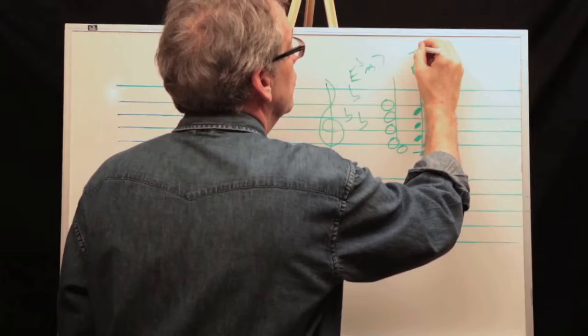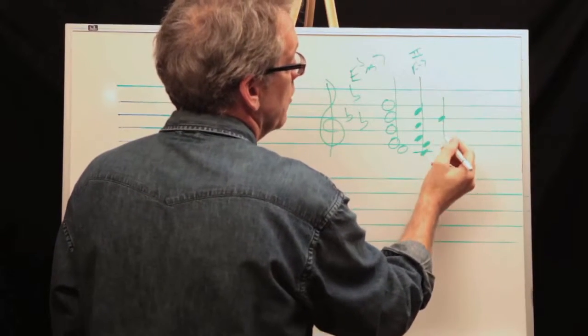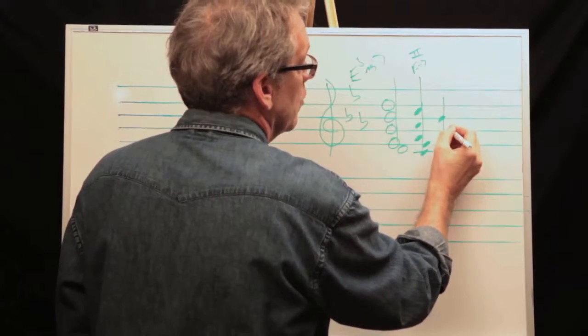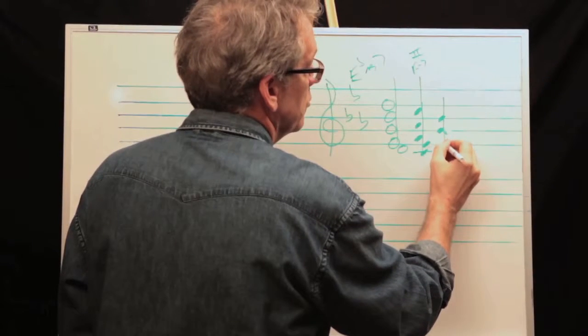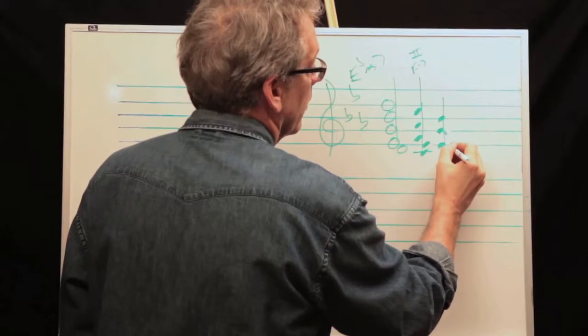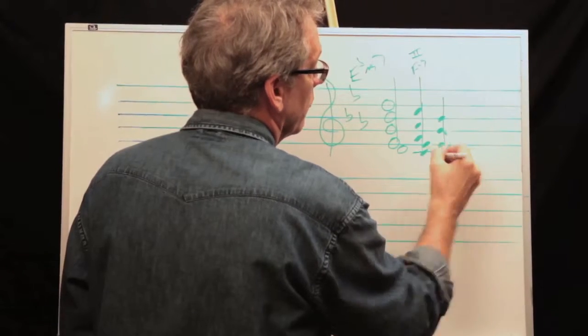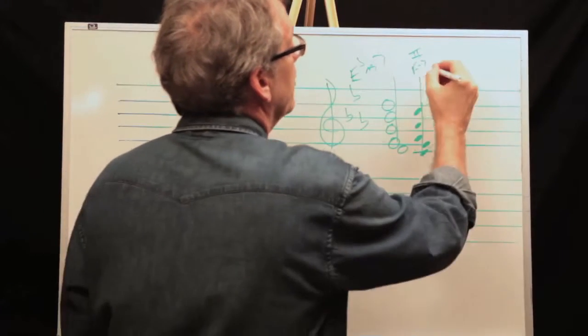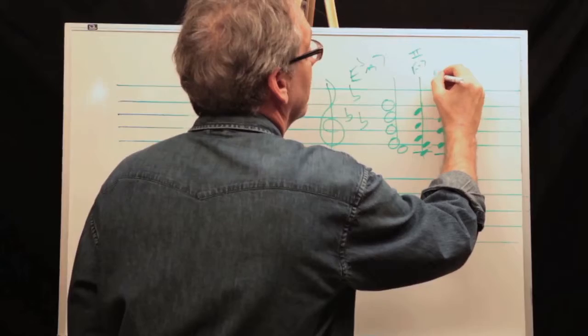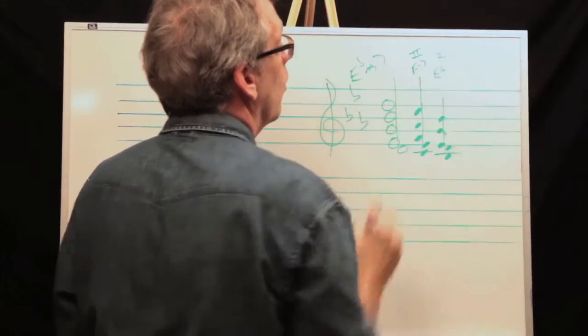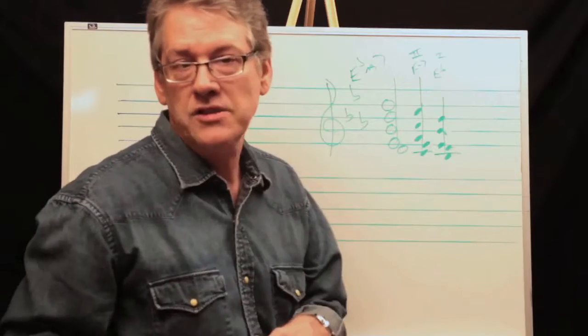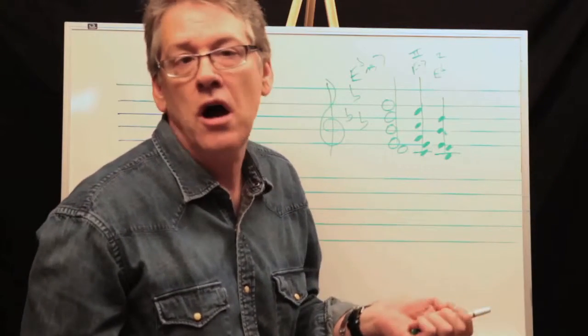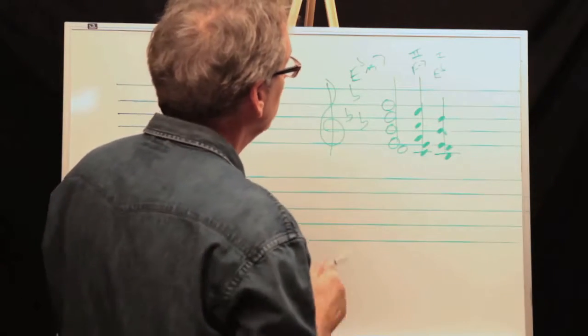So this would be F-minor seventh, which is our two. And then down to the B-flat again, we would just go back to E-flat, and there's B-flat. And this is back to our E-flat or one chord again. So that's using a two passing or diatonic because it's a diatonic chord.